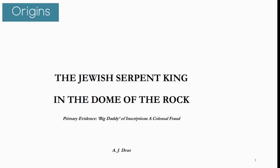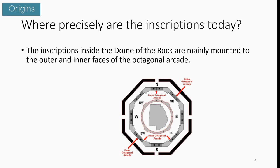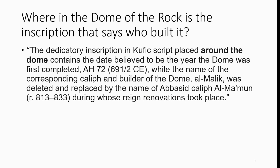The paper is called 'The Jewish Serpent King in the Dome of the Rock: Primary Evidence — Big Daddy of Inscriptions, a Colossal Fraud.' If you haven't seen Part 1, stop here and go back first. Now, where precisely are the inscriptions today? The inscriptions inside the Dome of the Rock are mainly mounted to the outer and inner faces of the octagonal arcade, as depicted in the picture.